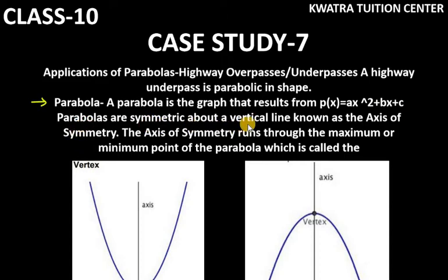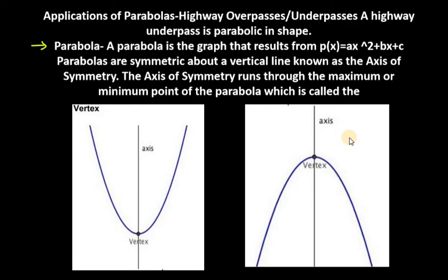Parabolas are symmetric about a vertical line. When you add two halves, the left side and the right side are equal. The axis of symmetry runs through the maximum or minimum point of a parabola which is called the vertex. You can see here that you have two diagrams. If one's left side, then it becomes a positive parabola, and the right side is negative parabola.